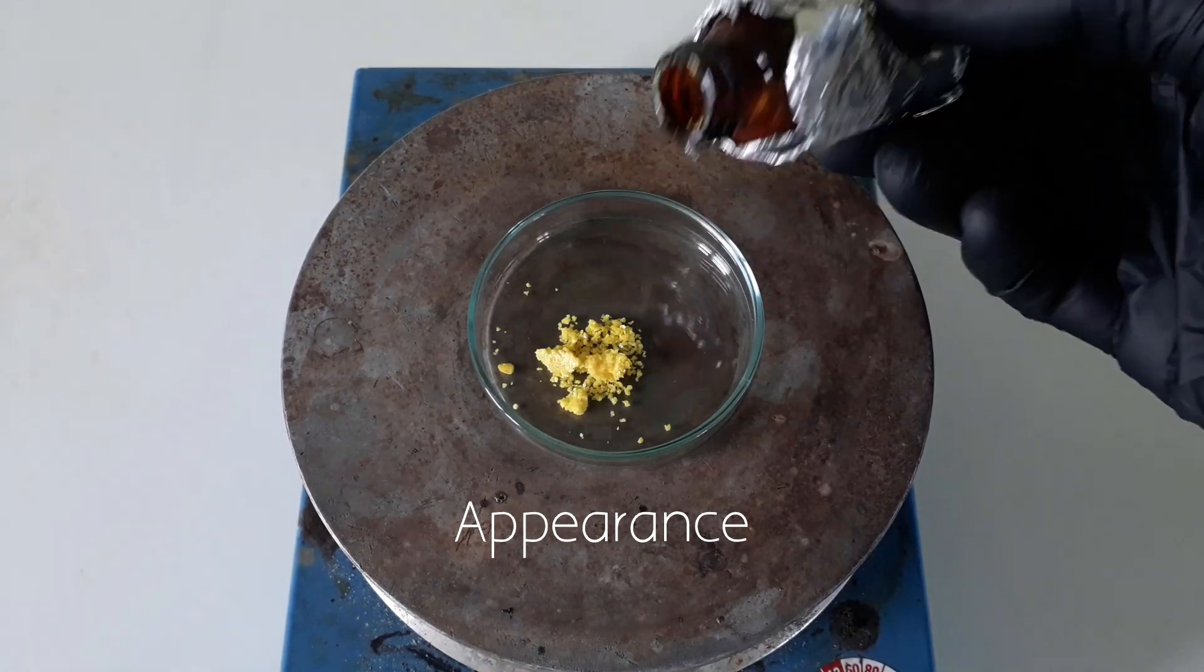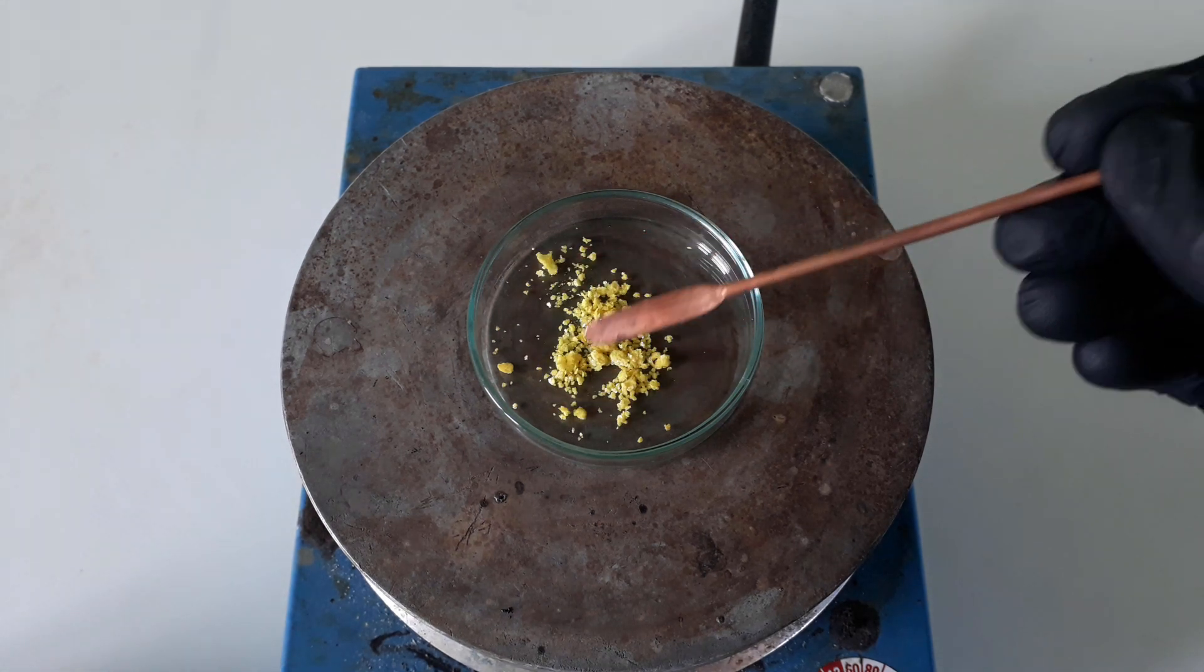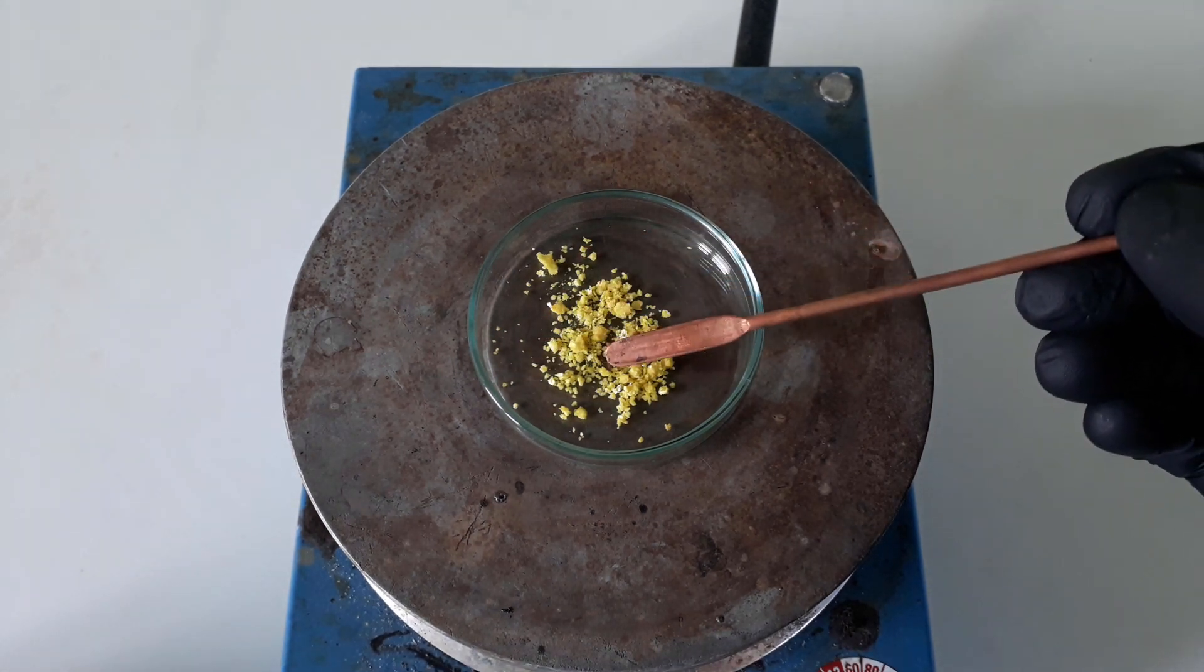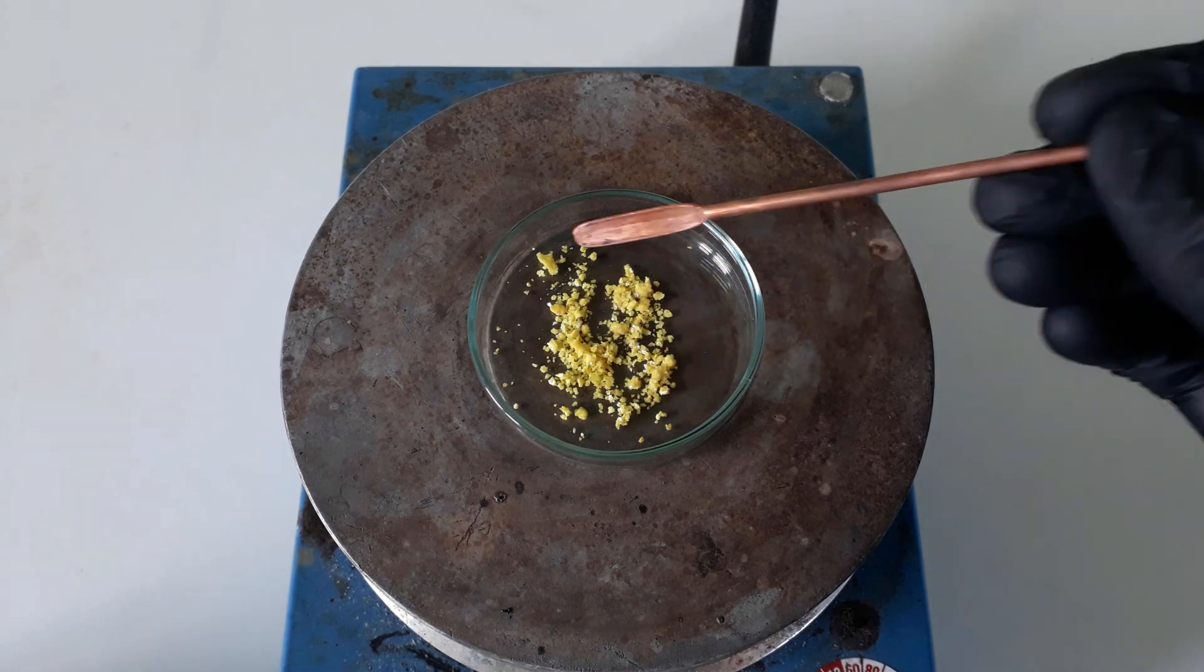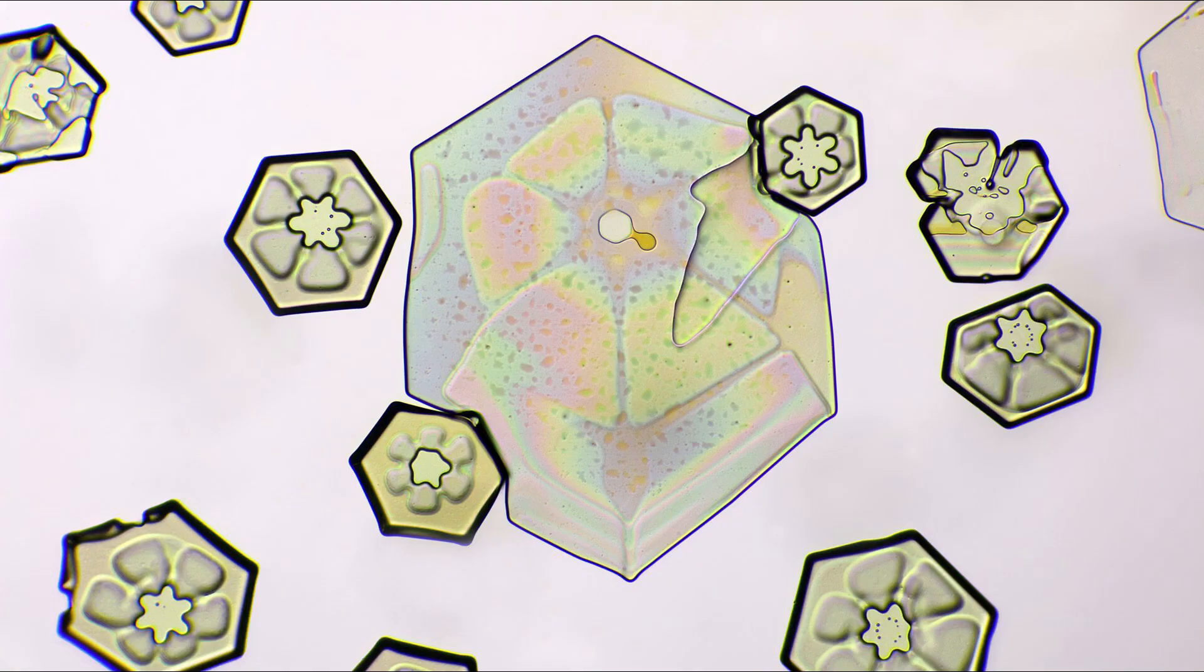Iodoform is a yellow colored crystalline solid with the formula CHI3. It has this really interesting crystal structure, as can be seen on this photo from Wikipedia.